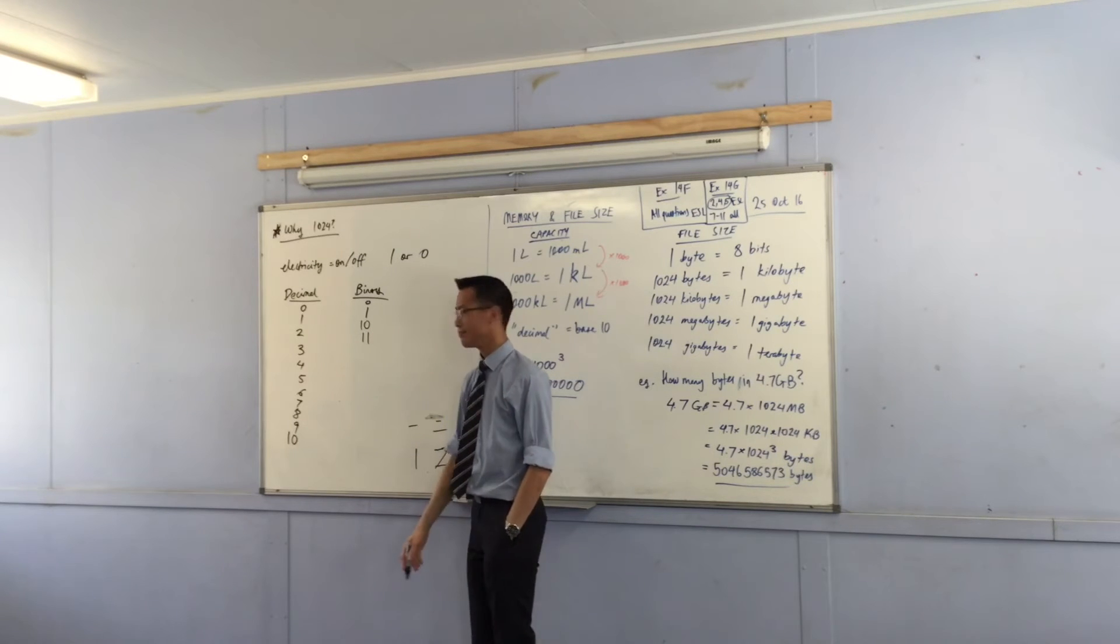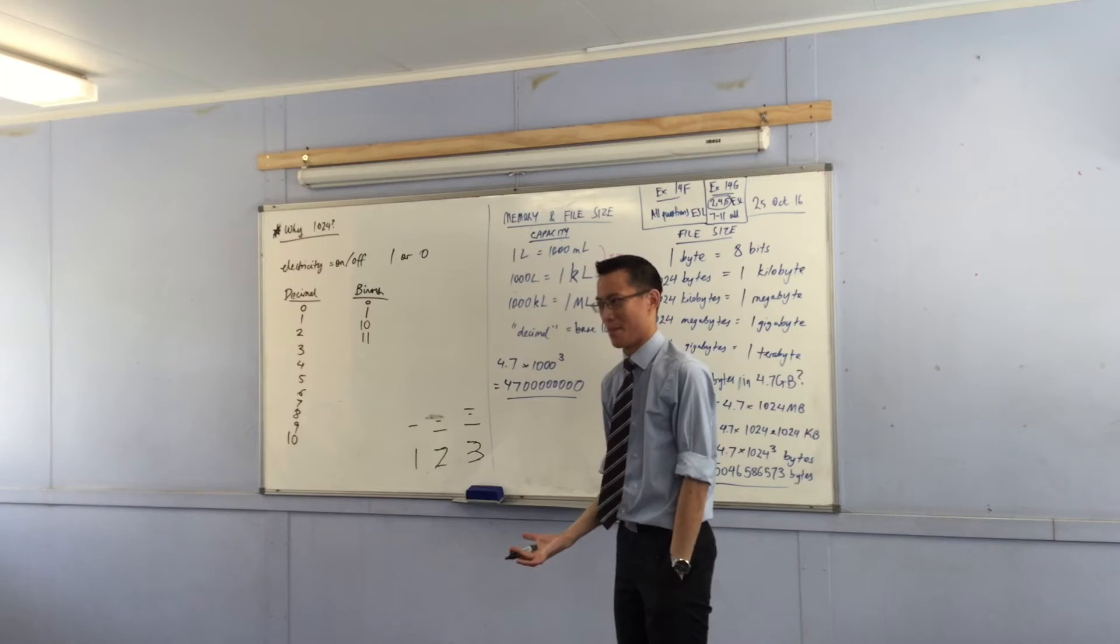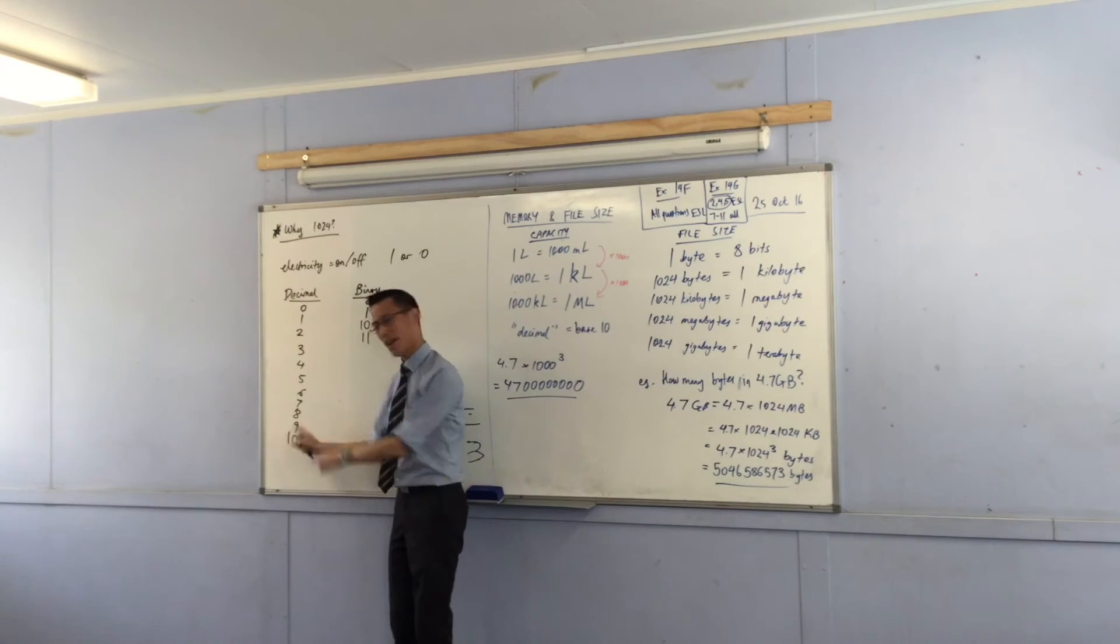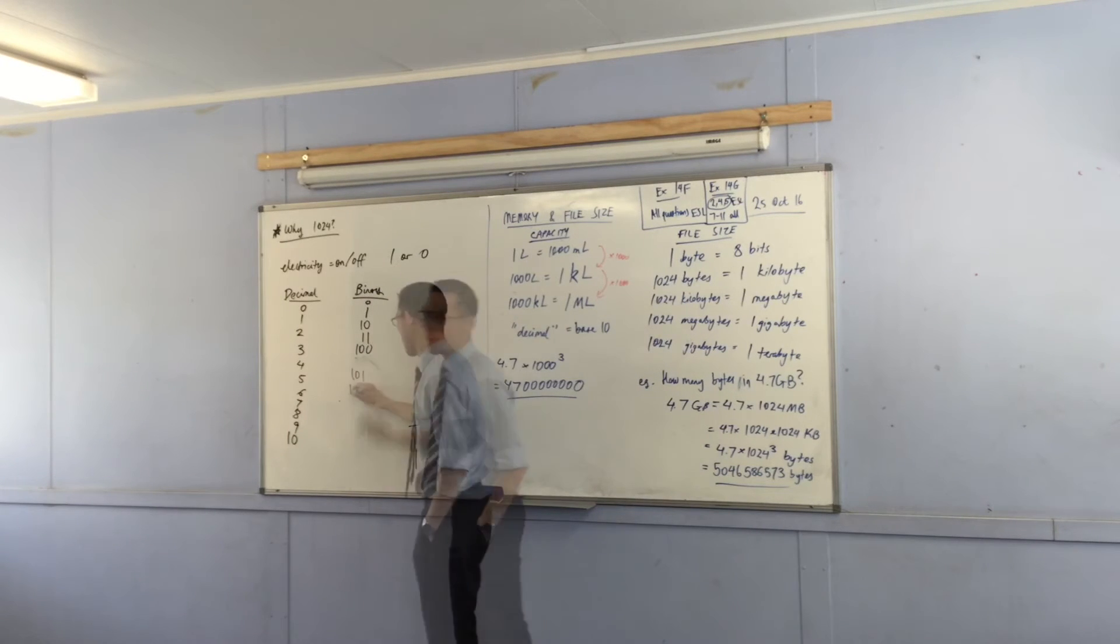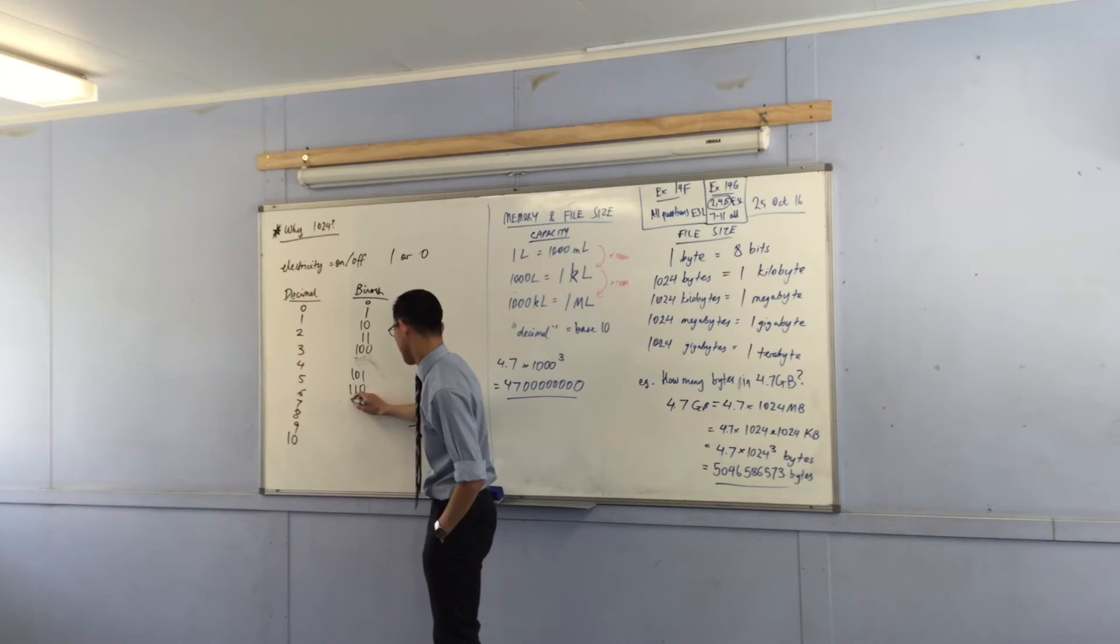Now, how do I keep counting in decimal? Well I start to reuse symbols, don't I? So when I get the next number it's going to be one one, and now I've used up all my symbols, haven't I?